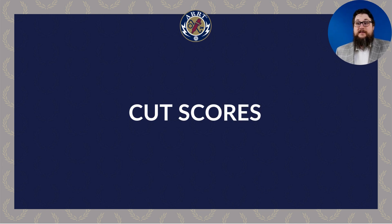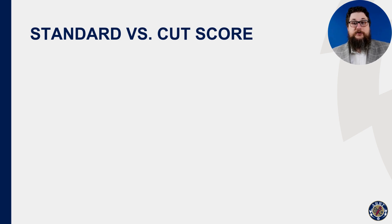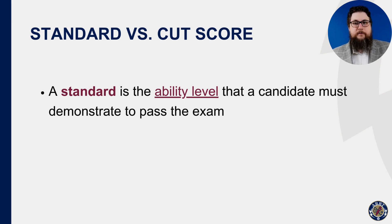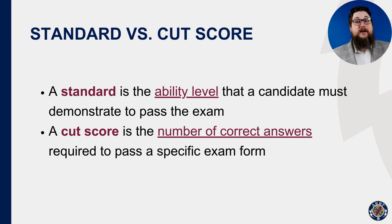Now that we have a passing standard, we can calculate the exam's cut score. Before we show off the mathematics, we need to cover a little vocabulary — specifically the difference between a standard and a cut score. There is only one standard for each exam because it represents the ability of a minimally qualified candidate. However, each unique set of items administered to candidates — we call that a form — has a different cut score. It will change to account for the difficulty of the items selected for that administration.